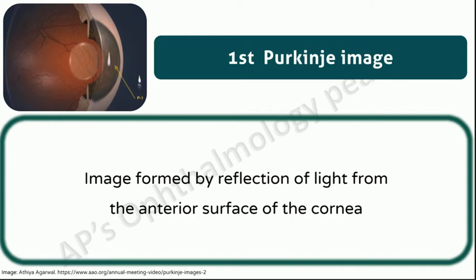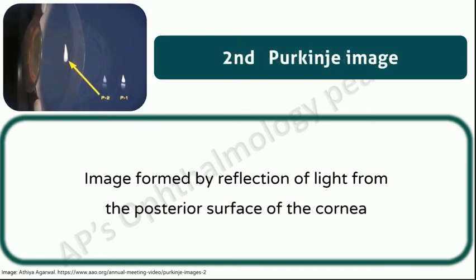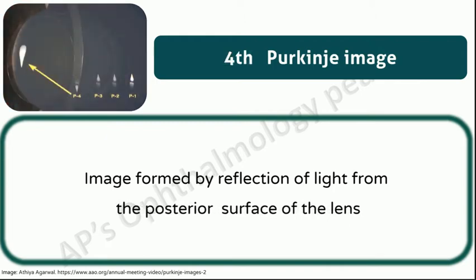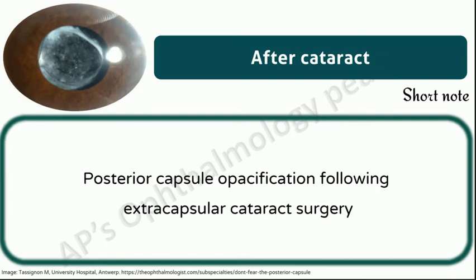First Purkinje image: image formed by reflection of light from the anterior surface of the cornea. It is this image that is made use of in the Hirschberg test. Second Purkinje image: image formed by reflection of light from the posterior surface of the cornea. Third Purkinje image: image formed by reflection of light from the anterior surface of the lens. Fourth Purkinje image: image formed by reflection of light from the posterior surface of the lens. The first three Purkinje images are erect and the fourth one is inverted.